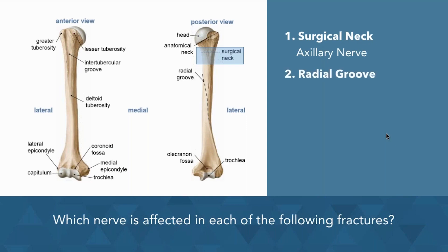Next let's look at the radial groove. If there is a fracture, it's important to know where the fracture is — whether the nerve is affected above the radial groove or below. We'll talk about this more in a later post, but we can see the radial groove here, and it's the radial nerve that's affected.